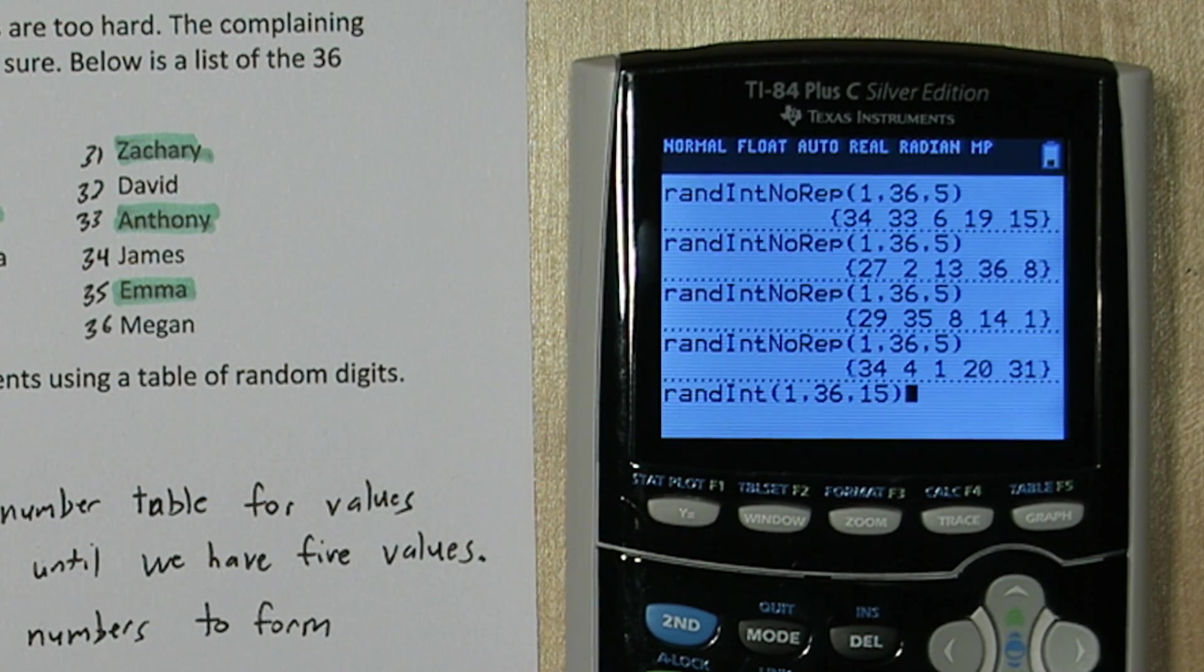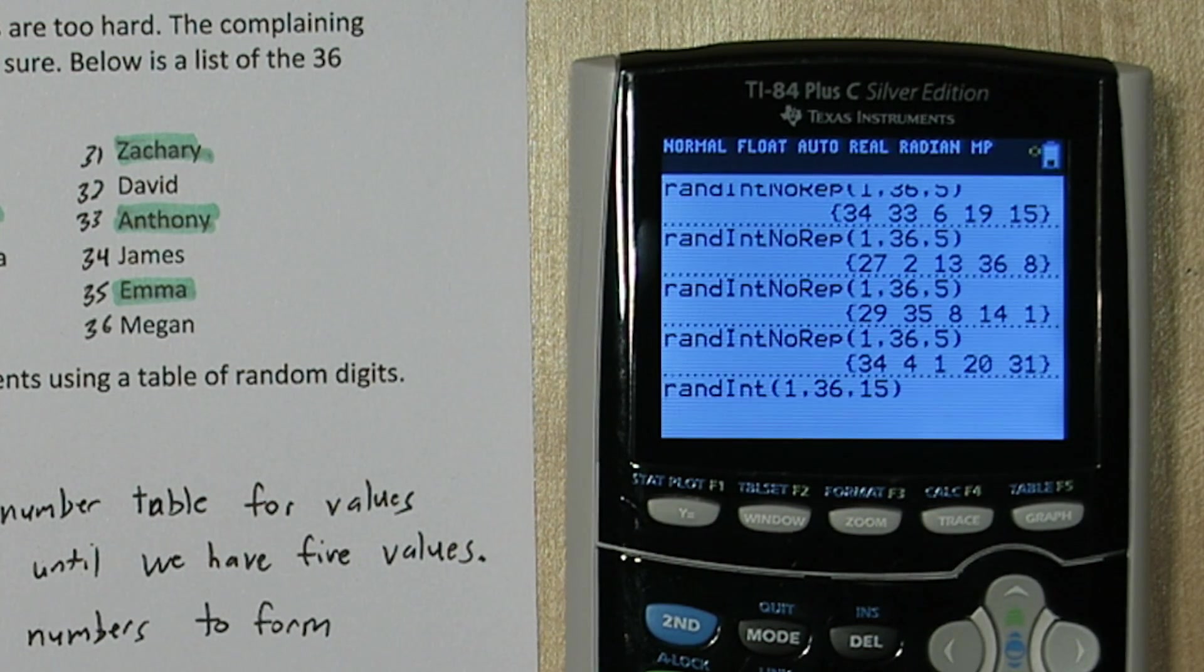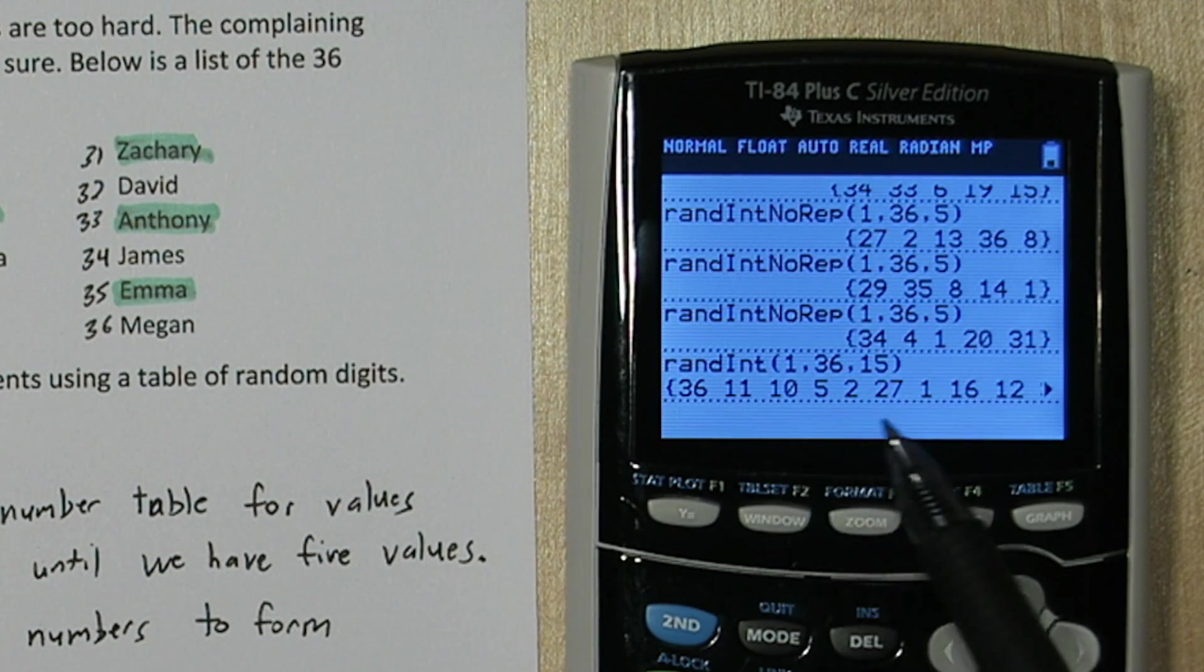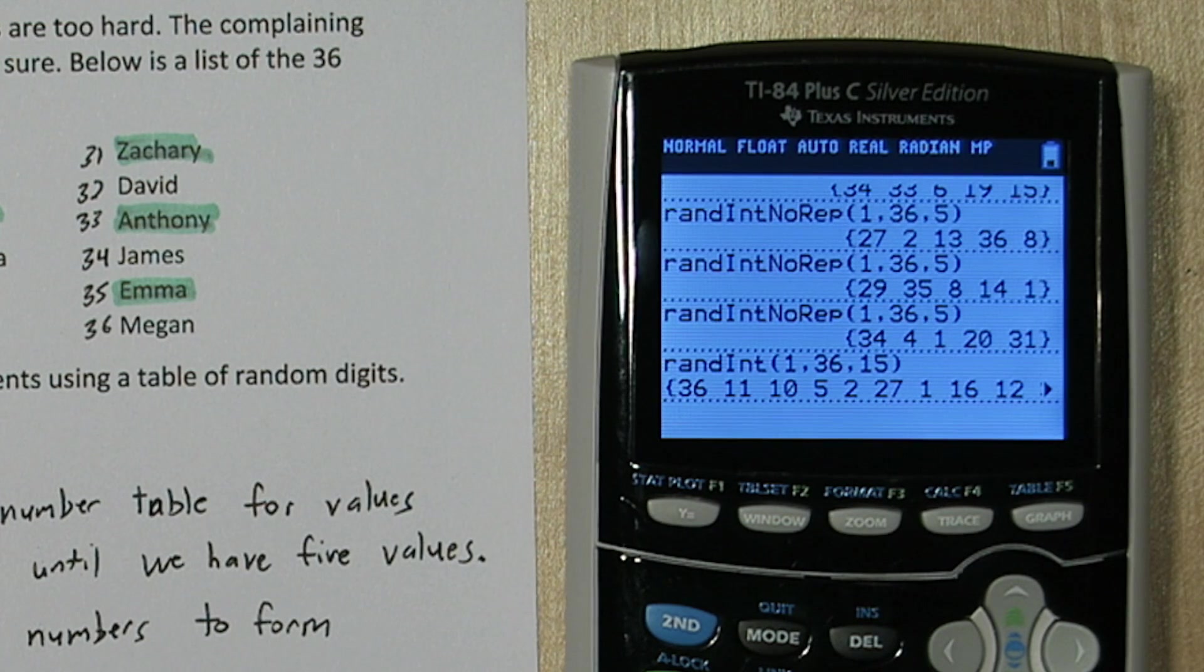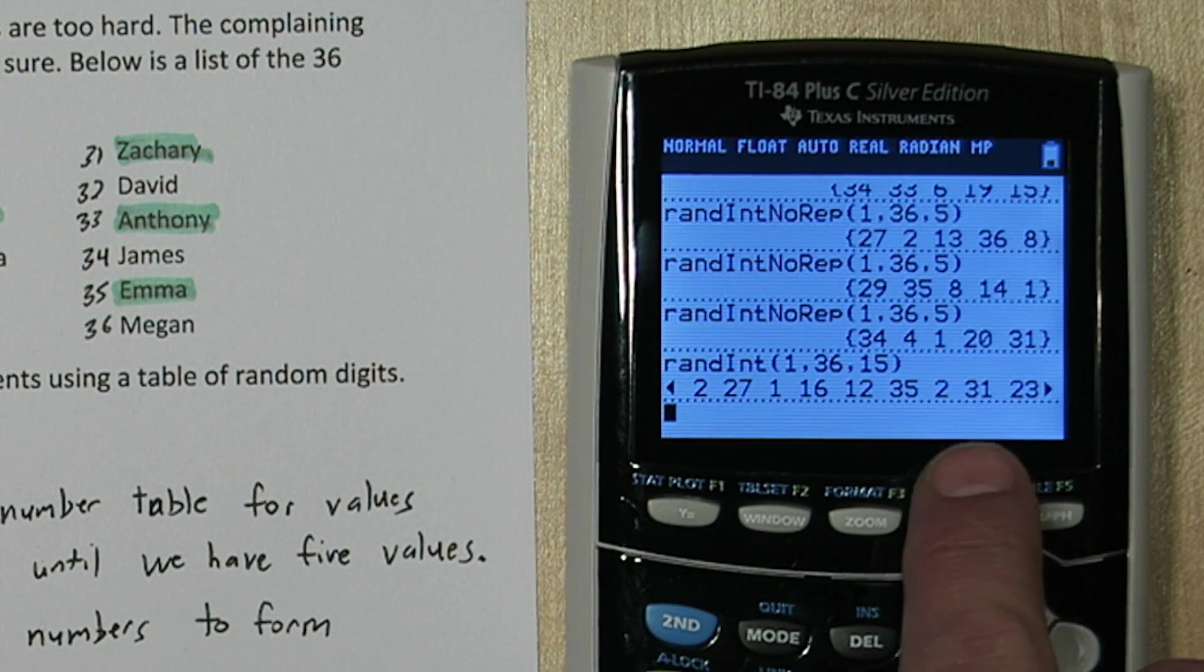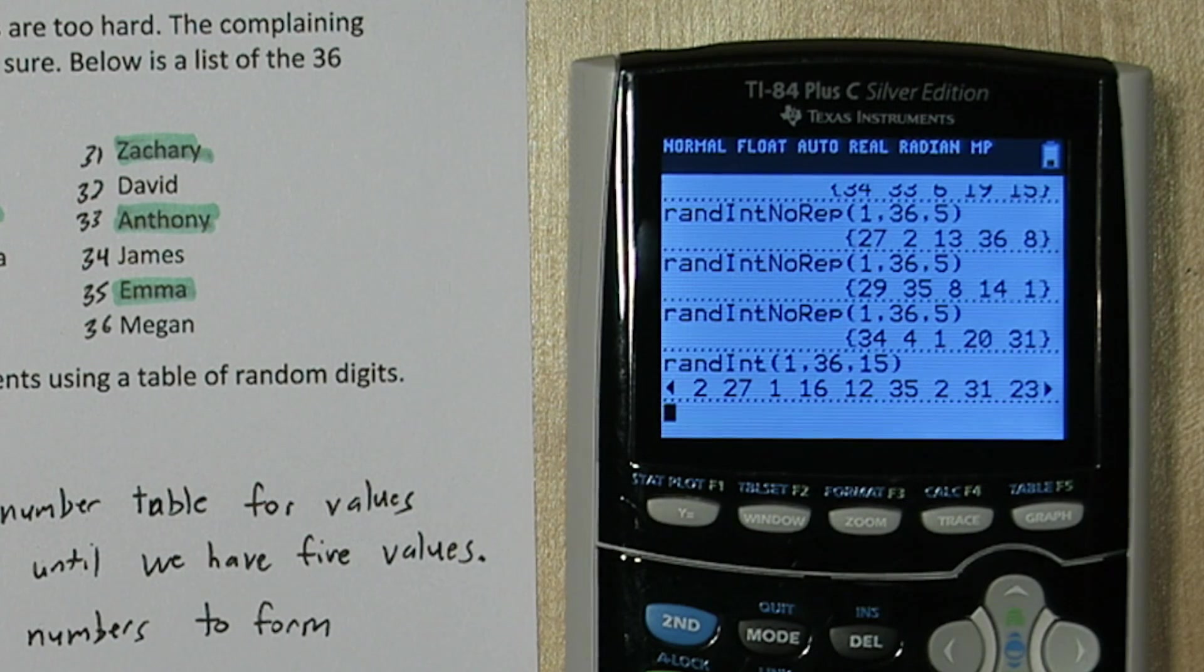And all I'm going to do is use the first 5 unique numbers. So let's see, 36, 11, 10, 5, and 2. Well the first 5 are unique, so I don't have to worry about it. But if I scroll through this, I think, yeah, we got two 2's right there. So this list does generate repeat numbers. So watch out for those.